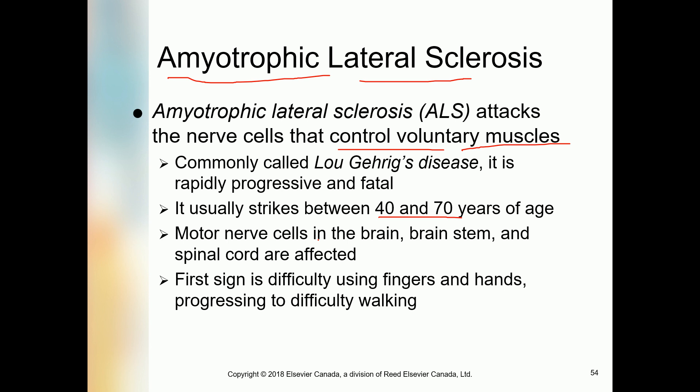Motor nerves in the brain, brain stem, and spinal cord are badly affected and nerve impulses are impaired. The first sign is difficulty using fingers and hands — they become dysfunctional. This progresses to difficulty walking, and finally the person becomes bedridden and cannot walk at all.